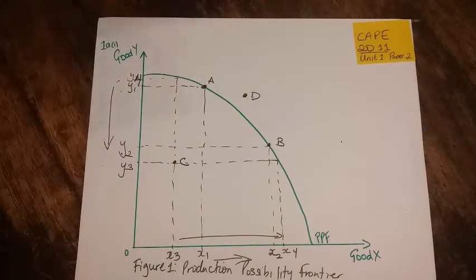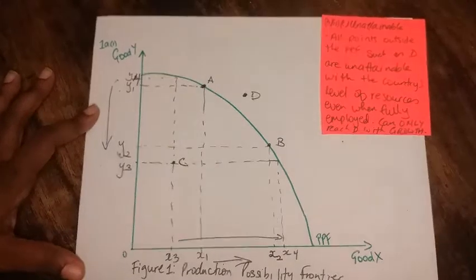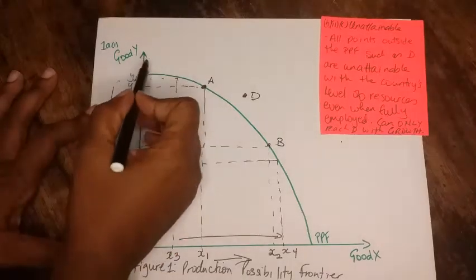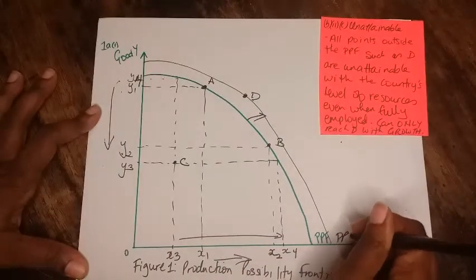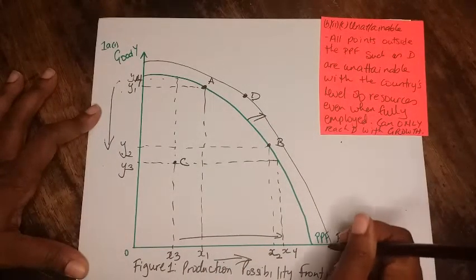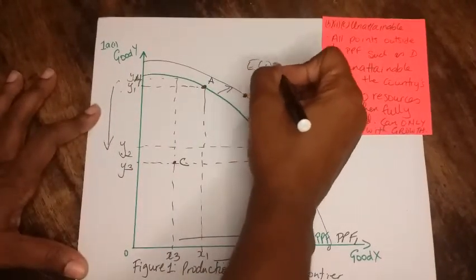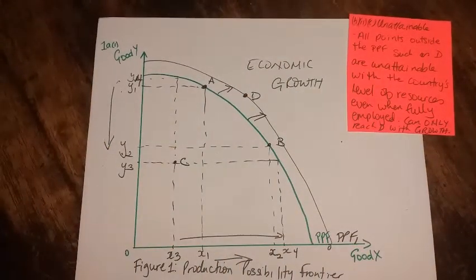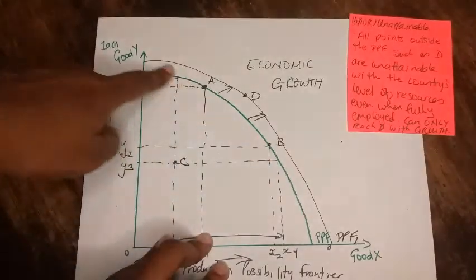And for part C, unattainable, that will be a point such as D, where the country's resources will not permit us to reach at such a point even when fully employed. We can only get to a point D when we have economic growth and a shift in the PPF curve, a rightward shift to take us to PPF1. So you could call the first one PPF0 and the other one PPF1. We can only reach to a point such as D if we have economic growth, meaning we have an increase in resources and increasing technology. So D is unattainable with the level of resources that we have at PPF0.